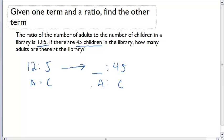What we can do is we can figure out, using equivalent ratios, how many adults there have to be in the building, in the library.